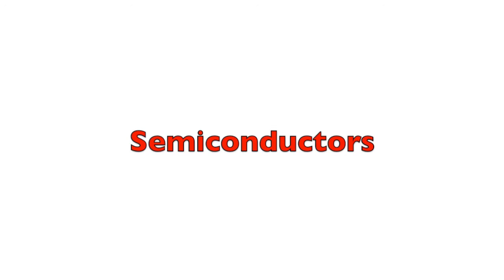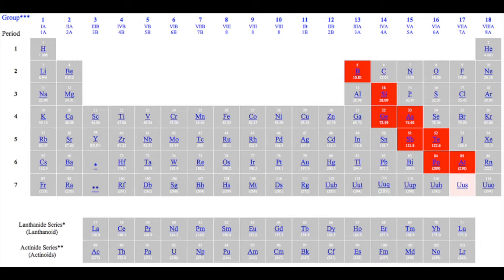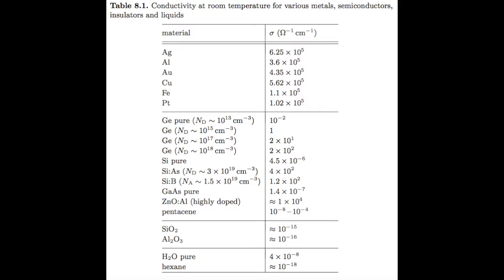Today we'll be talking about semiconductors. While pure elemental semiconductors are the metalloids, which exist between the metals and the non-metals on the periodic table, they can also be produced in compounds, but we won't be getting into too much detail with those. After talking about how semiconductors work, we'll look at a few important devices and how they work.